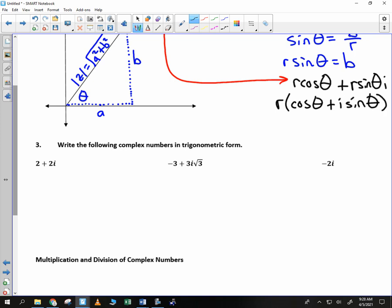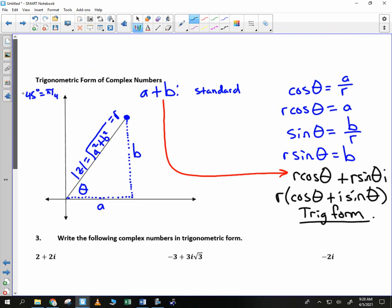And this is what we call trig form. We have standard form of a complex number, we have trigonometric form of a complex number. And we didn't make this formula up. We simply gathered some equations from SOHCAHTOA and pieced it together.